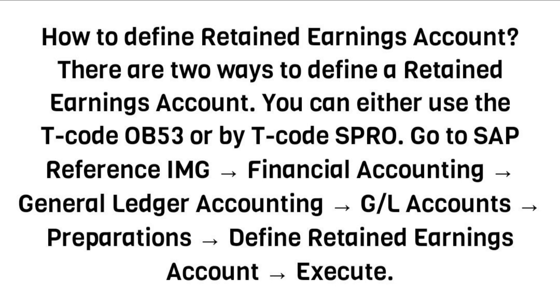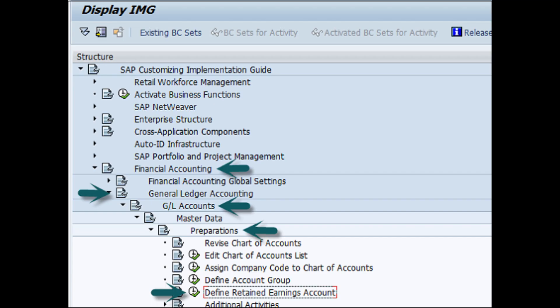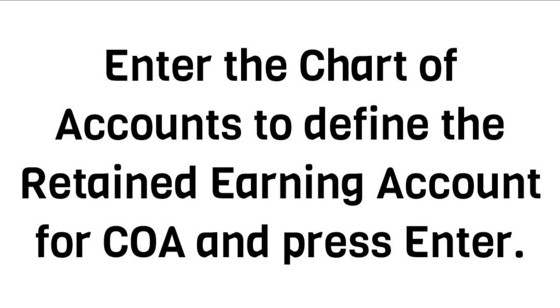Go to SAP Reference IMG, Financial Accounting, General Ledger Accounting, GL Accounts, Preparations, Define Retained Earnings Account, and Execute. Enter the Chart of Accounts to define the Retained Earnings Account for the COA and press Enter.